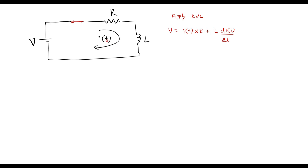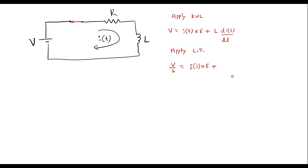We are supposed to calculate I of t. For easy simplification I will apply Laplace transform. Laplace transform of the constant V gives V by S. Laplace transform of I of t is I of S. R is a constant and is kept as it is, plus L is also a constant.